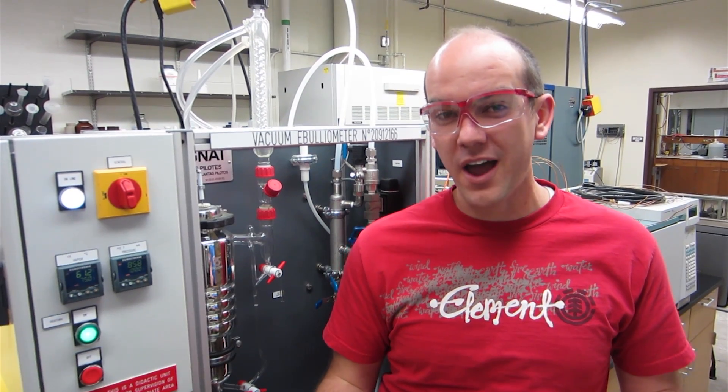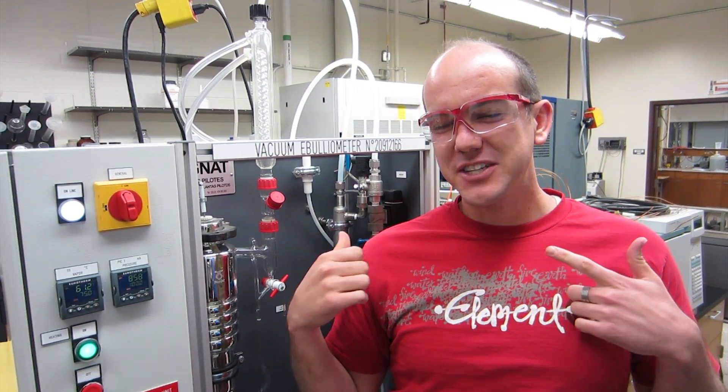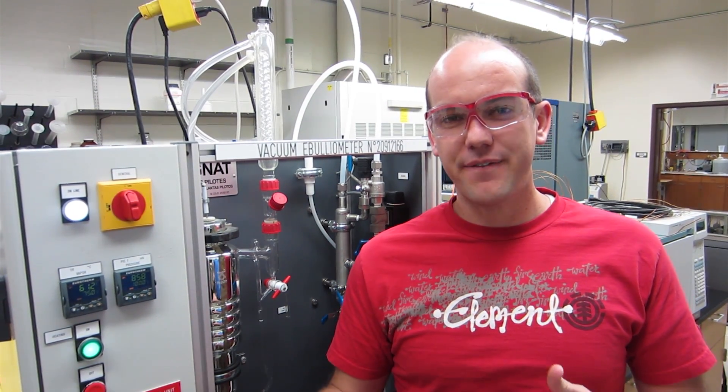Okay, here we got the ebulliometer. It's generally used to measure the alcohol content in wine. We're not going to do that in your lab. What we're doing is using it to measure the vapor liquid equilibrium data for ethanol and cyclohexane.